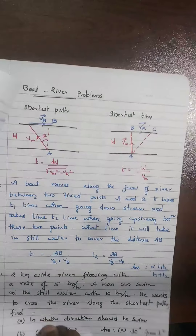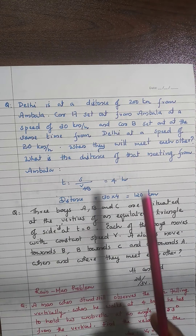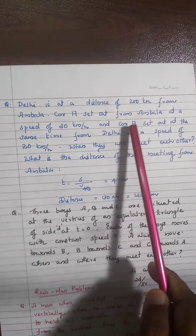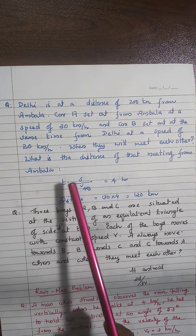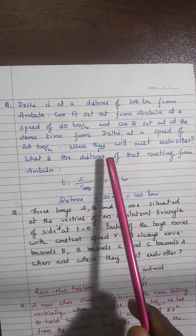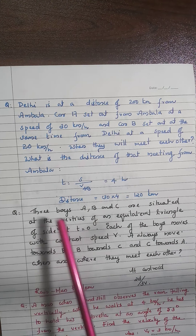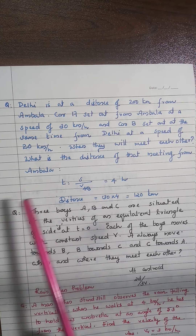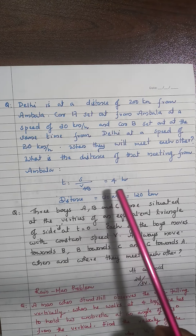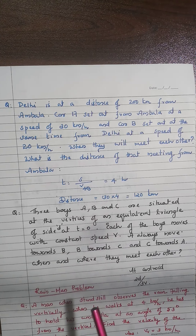Another important problem: Delhi is 200 km from Ambala. Car A sets out from Ambala at 30 km/h, and car B sets out from Delhi at the same time at 20 km/h moving towards each other. When will they meet, and how far from Ambala? The time is found as total distance divided by the relative velocity.